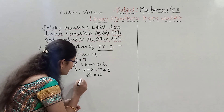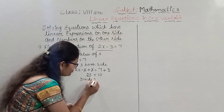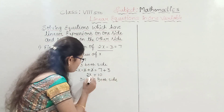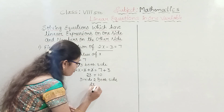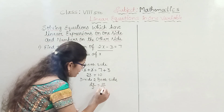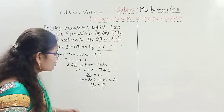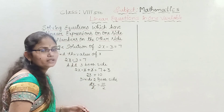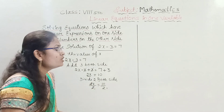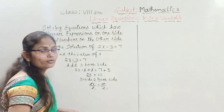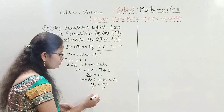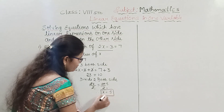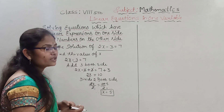After dividing both sides by 2, the 2's cancel on the left. On the right, 10 divided by 2 equals 5. Therefore the value of x equals 5. This is the solution of the equation 2x minus 3 equals 7.